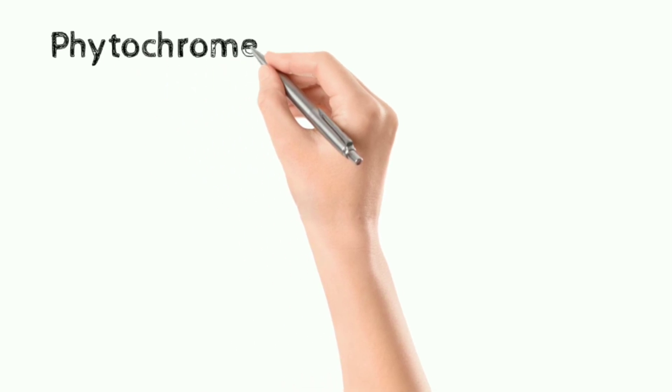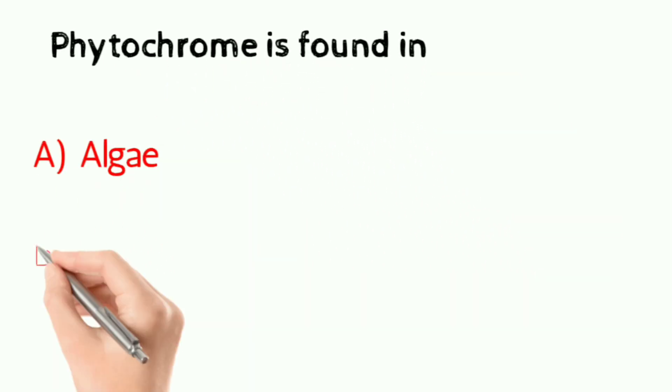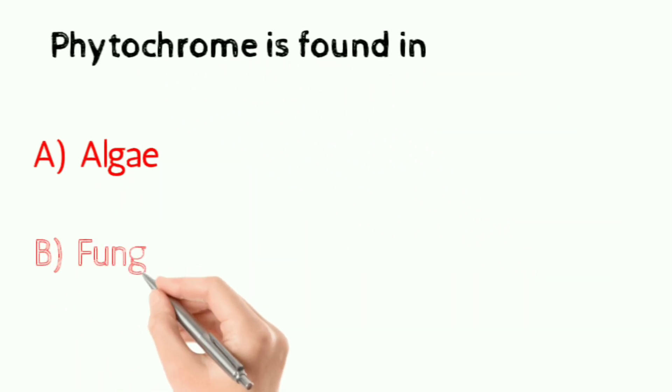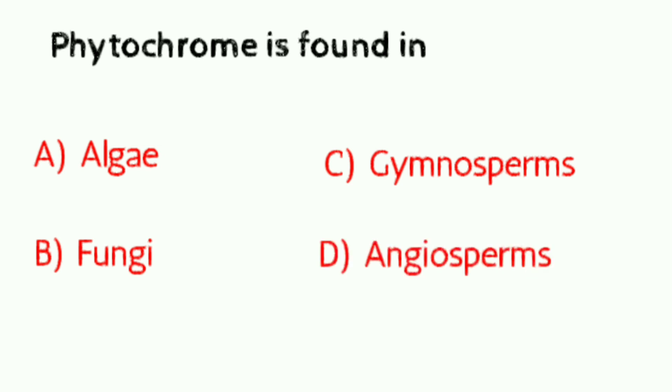Question number nine: phytochrome is found in — a) algae, b) fungi, c) gymnosperms, d) angiosperms. Correct answer is angiosperms.